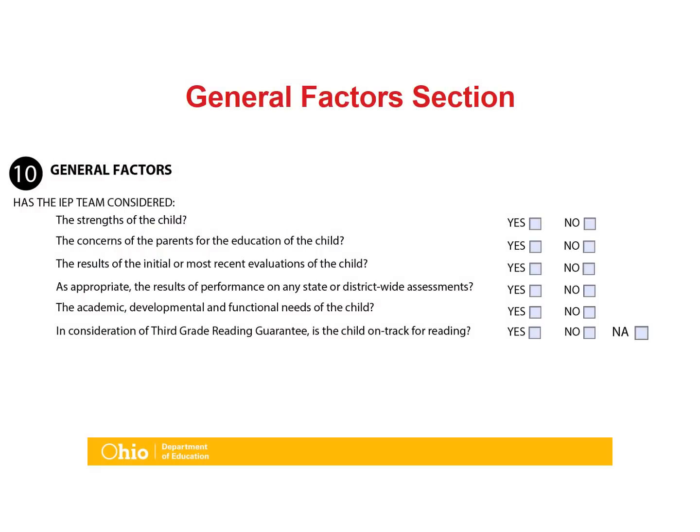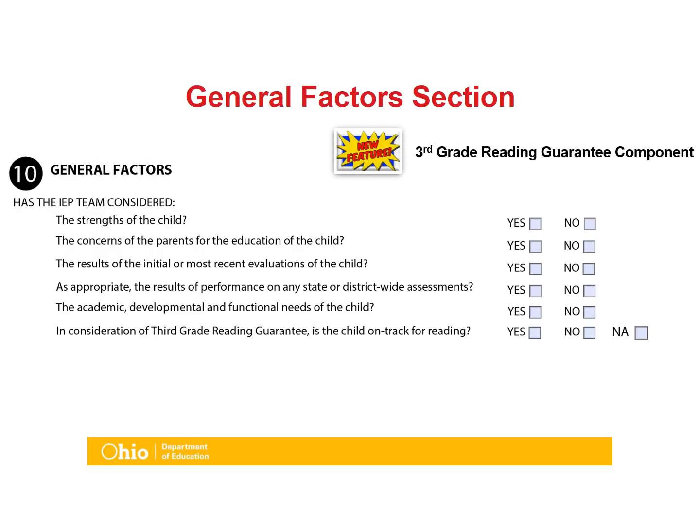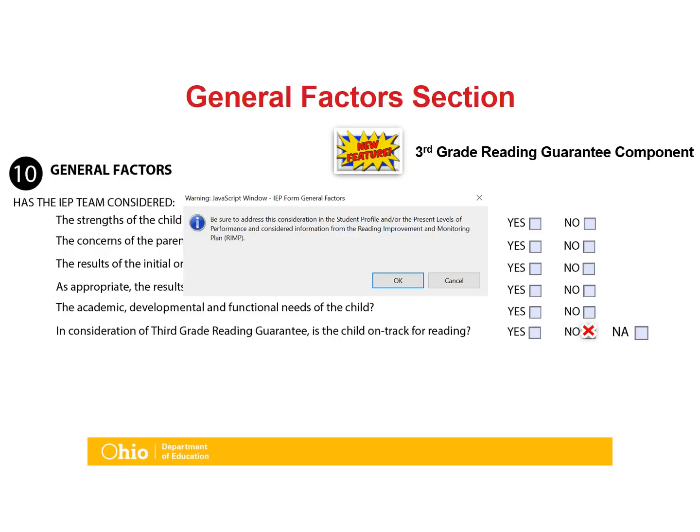In Section 10, the General Factors section of the IEP, a third grade reading component was added. This component is for all students grades K through 3. When No is selected, it prompts the writer to address that consideration in the Student Profile section and/or the Present Levels of Performance section.